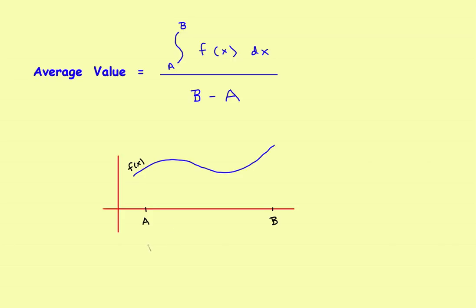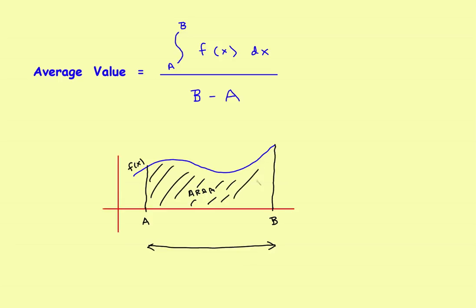You want to find it on the interval from a to b, starting from here and ending here. If you go straight up from a and straight up from b, you'll find the area under this curve. So if you find the integral from a to b, that gives you the area under the curve. The average value is just the area under the curve divided by the width of the interval.